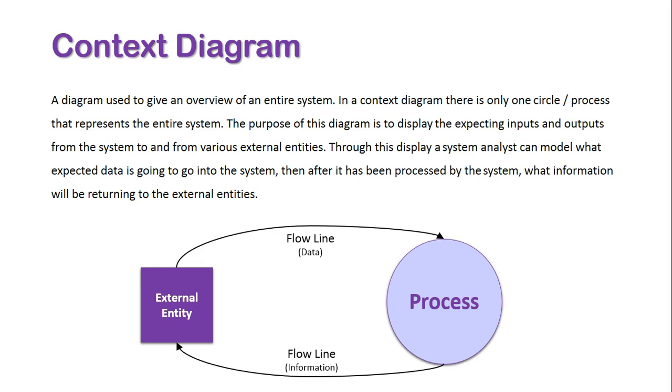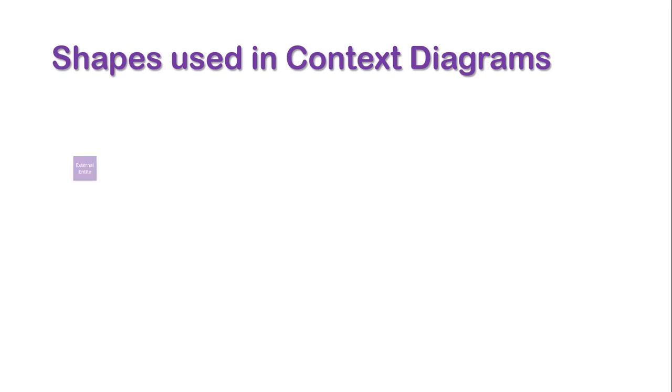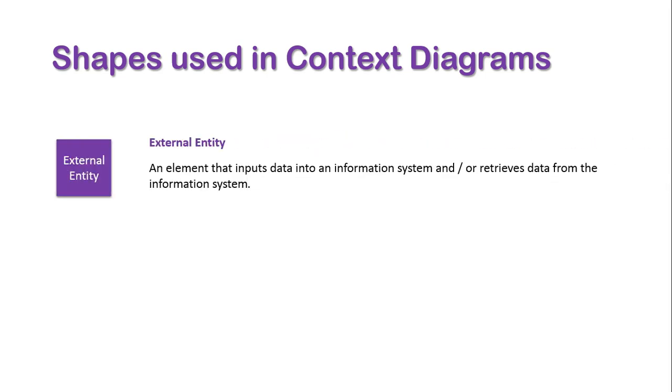Let's break down these elements of the context diagram. First, we have the external entity, which is an element that inputs data into the information system and/or receives data from the information system.